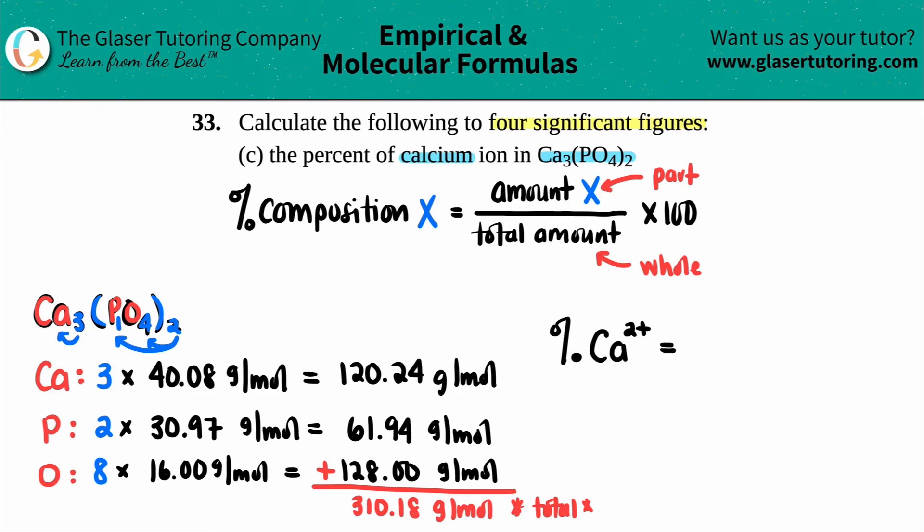Okay. So the amount of the calcium, the total amount is this, 120.24 divided by, right, the total amount. And the total amount, the total molar mass was 310.18.